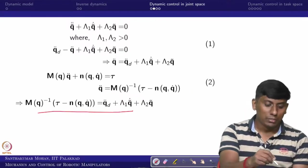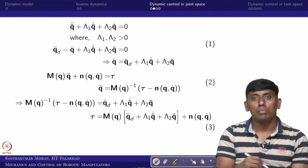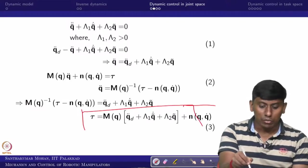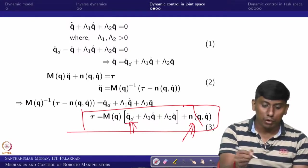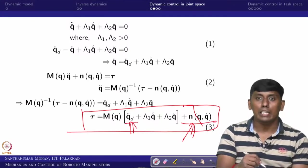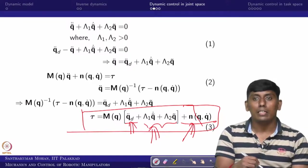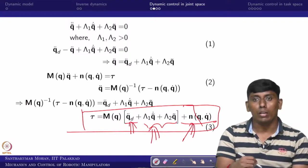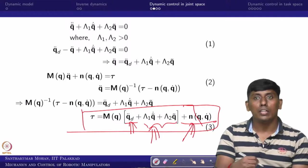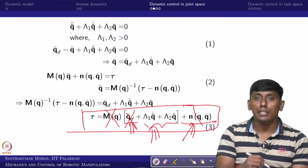We get this final form where tau is the input. Rewriting, tau comes in this way. Here, this is the feed-forward term, this is the feedback linearization, and this is the feedback term — a simple PD control. This is what we call computed torque control in general in the robotics community. It need not always include the feedback linearization or feed-forward — even simple PD or PID control can be used.